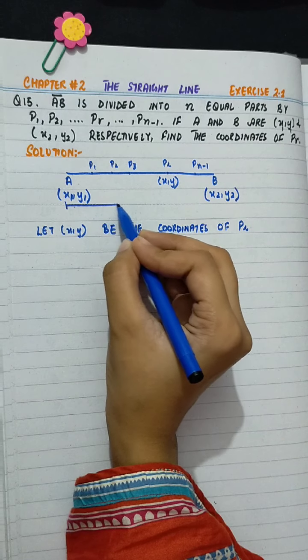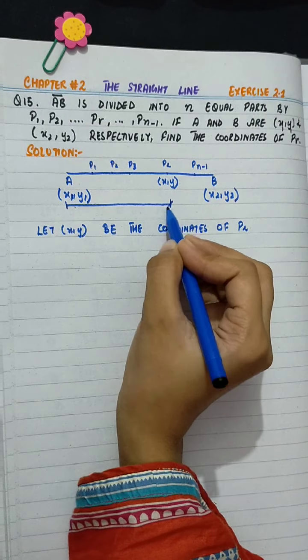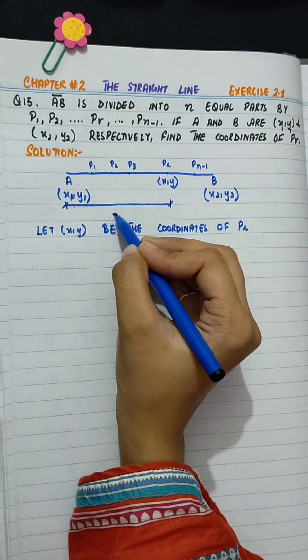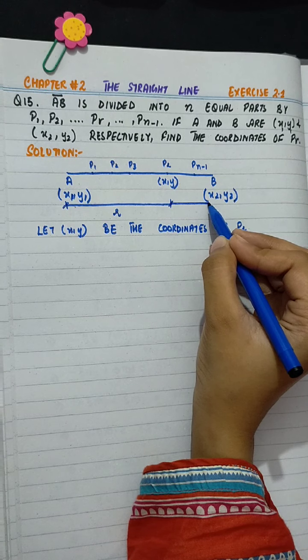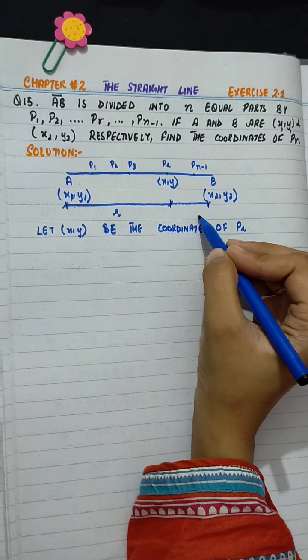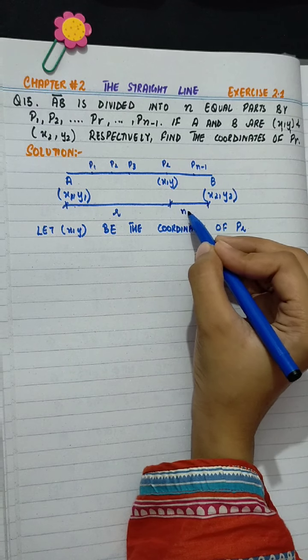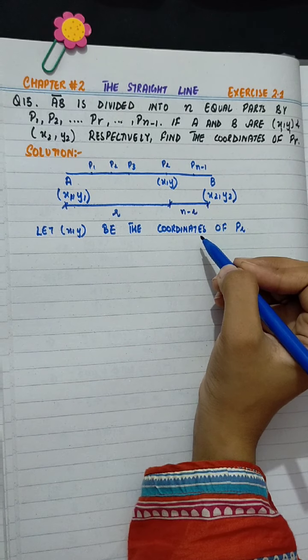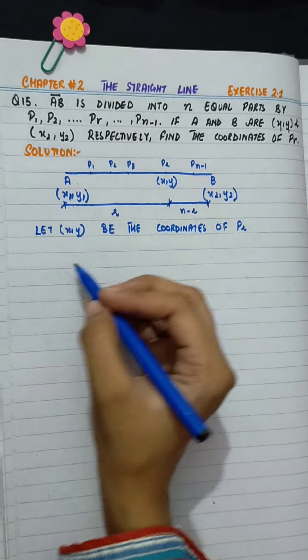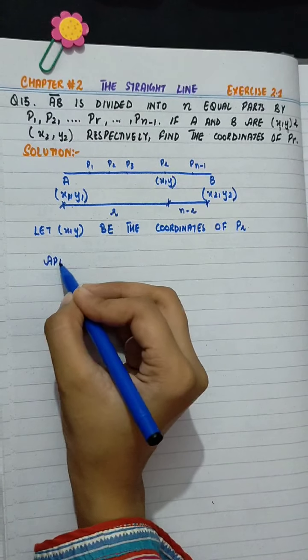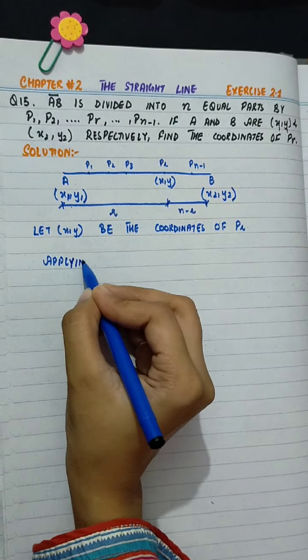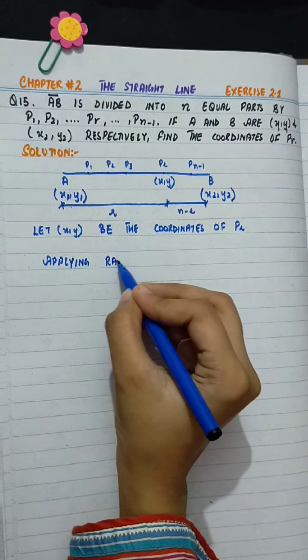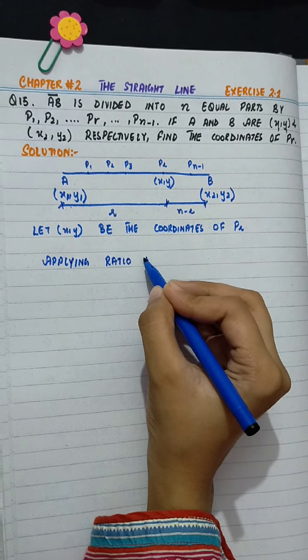Equal parts are divided, so here, PR to the distance, what will I have? R. And here, we have N to the distance, what will I have? N minus R. Okay, point B. Now, applying ratio theorem.